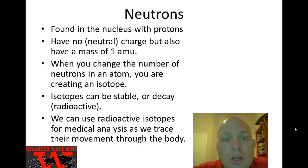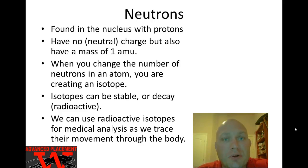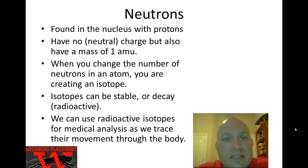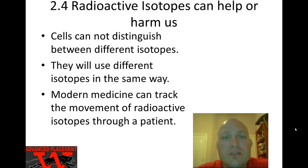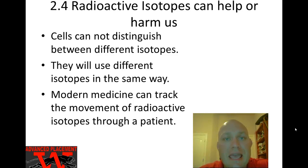Neutrons are also found in the nucleus, about the same size as protons — one atomic mass unit. When you change the number of neutrons in an atom, you create what's called an isotope. Some isotopes are very stable and last for thousands of years; others are very unstable and they decay. When that nucleus breaks down, it gives off radiation — these are radioactive isotopes.